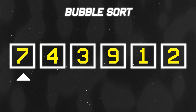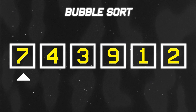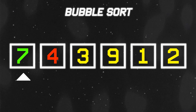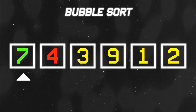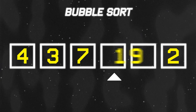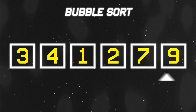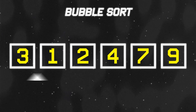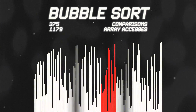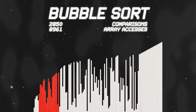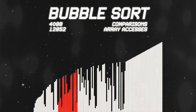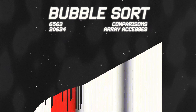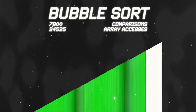Bubble sort is one of the most popular sorting algorithms, probably because it's the easiest. Bubble sort has an index that goes through the entire list. If the number it's on is larger than the next item, it switches them and then moves forward. It then repeats this until every single item in the list has properly been sorted. Bubble sort has terrible performance and is only ever used to teach how sorting algorithms work.